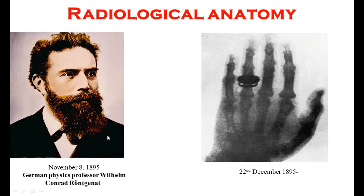Röntgen discovered X-rays on November 8th, 1895. He took the first skiagram, or first radiograph, on 22nd December 1895. This was an X-ray of the hand of his wife — the first ever skiagram.